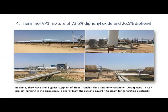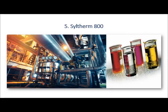Four, Therminol BP-1: combines exceptional thermal stability and low viscosity for efficient design to meet liquid phase system requirements for 257 to 400 degrees Celsius, or vapor phase systems for 12 to 400 degrees Celsius. Five, Syltherm 800: it is a clear yellow silicone polymer that offers excellent stability. In particular, it has little tendency to flow at high temperatures and under the conditions of use.